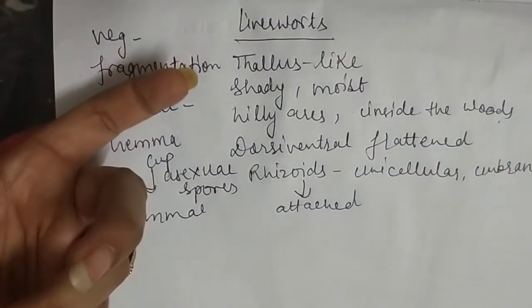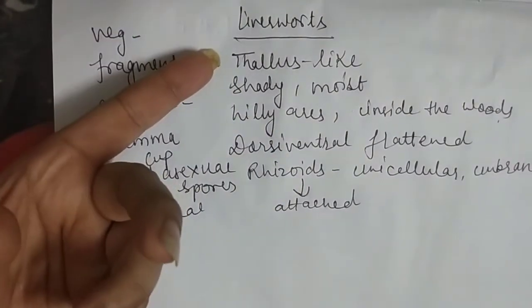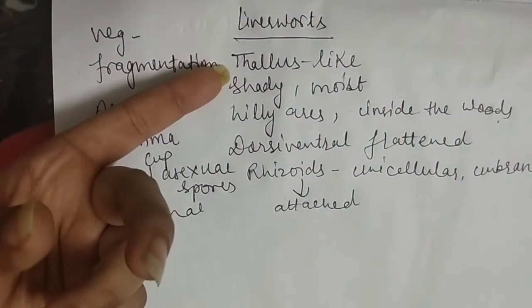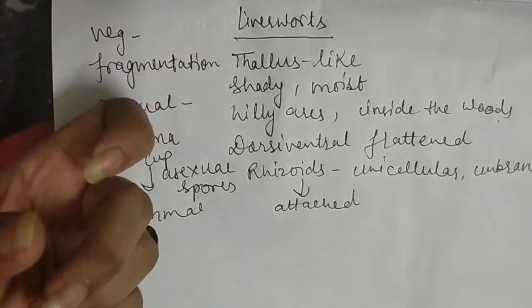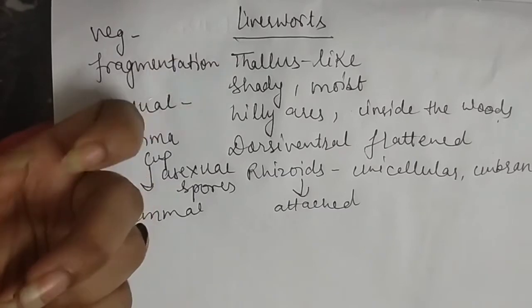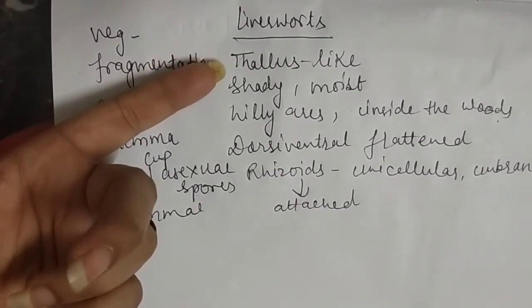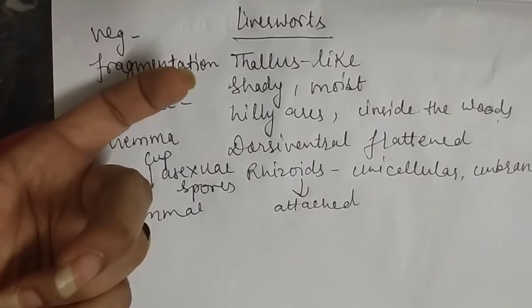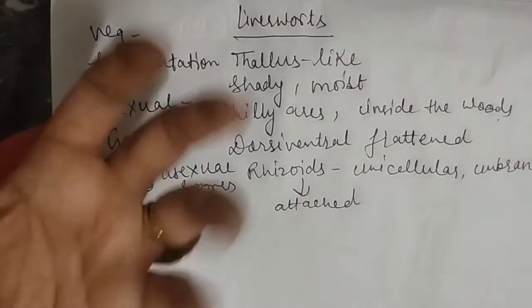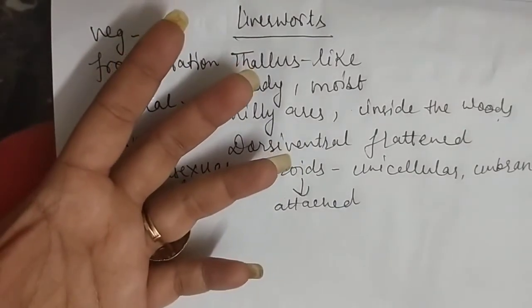The sporophyte, which we discussed in the life cycle, develops on the gametophyte because the sporophyte cannot produce its own food — the gametophyte is photosynthetic and makes food for both. The sporophyte has three parts: foot, seta, and capsule. Inside the capsule are spore mother cells. When the capsule bursts, the spores are dispersed and develop into new organisms.